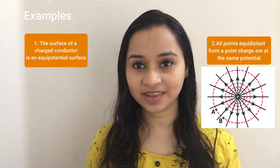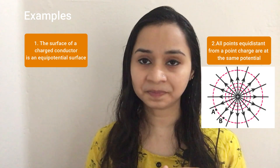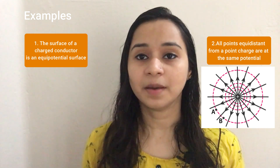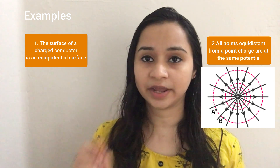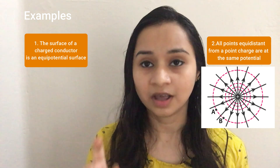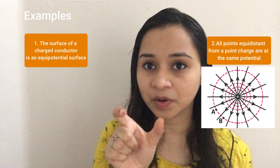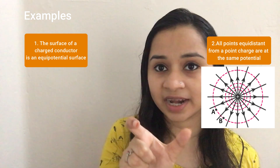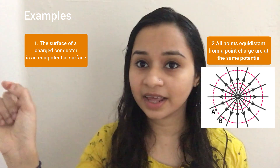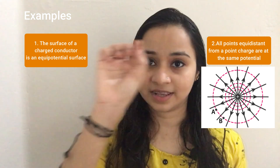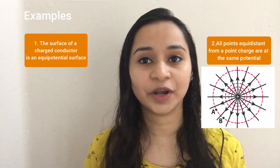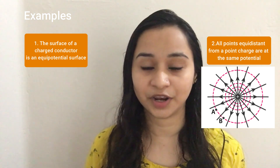The surface of an electrically charged conductor is an equipotential surface. A second example is a point charge. A point charge placed at the center of concentric circles — at a particular radius, all points are equidistant. So the concentric circle is the equipotential surface of a point charge.